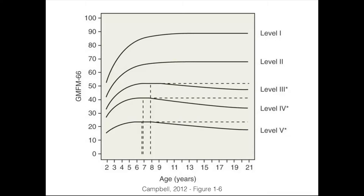Children progress faster to their maximum gross motor function measure score at younger ages, followed by a leveling off. In levels one and two, there's a leveling off, while in levels three, four, and five, we actually see a decline over time. Level five peaks at about age six and a half, level four at about age seven, and level three at about age eight, and then they decline. Levels three, four, and five are our more severely affected children, so children with more severe cerebral palsy show more of a decline over time.